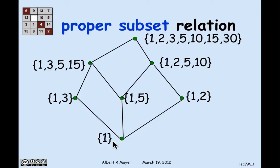The set consisting of just 1 is a proper subset of 1 and 5, because the set has 1 in it, but it has an extra thing, 5. And also, there's a path from 1 up to 1, 2, 5, 10, because 1, 2, 5, 10 has a 1 in it and extra stuff. So that's what the picture is illustrating, the proper subset relation on this particular collection of seven sets.